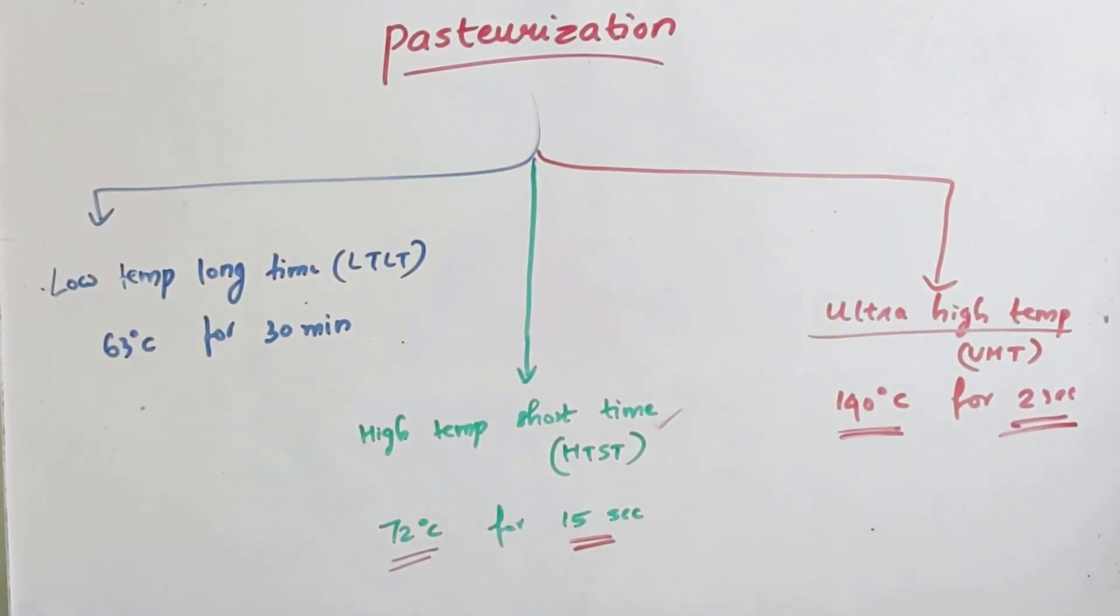First one is low temperature long time pasteurization or LTLT pasteurization. As the name indicates, a low temperature is applied for a long period of time. That is 63 degrees Celsius for 30 minutes.